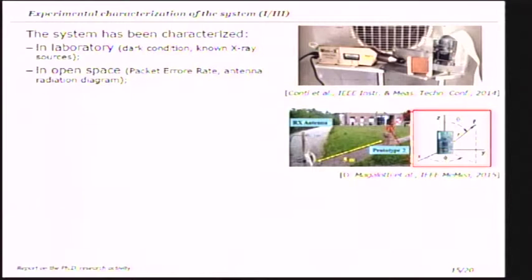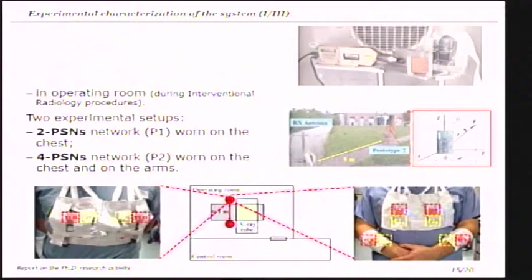The sensor and the system were characterized in the laboratory by exposing them to an x-ray source in open space, by evaluating the losses of the wireless interface, and also in an operating room. Two experimental setups were considered: a network with two prototypes and a network with four prototypes.